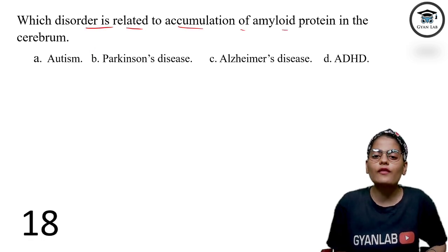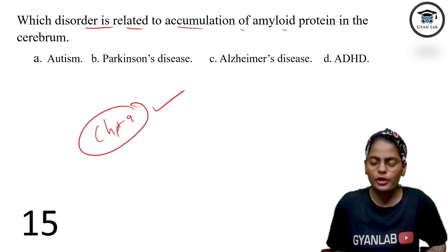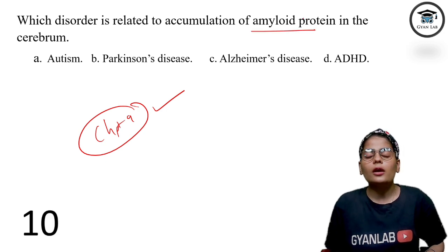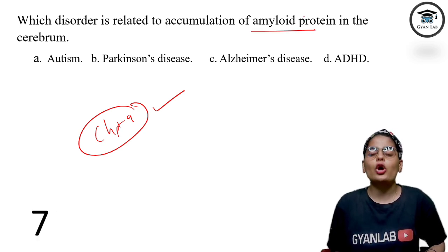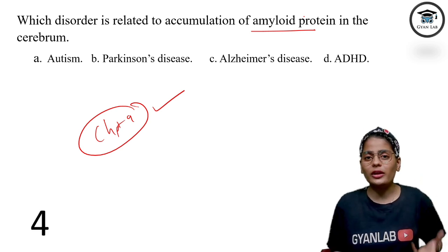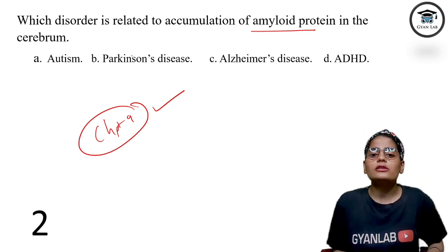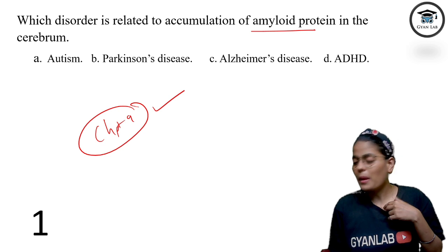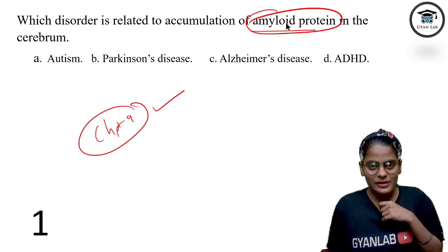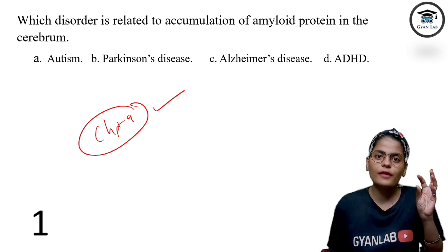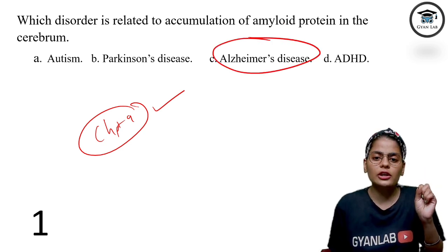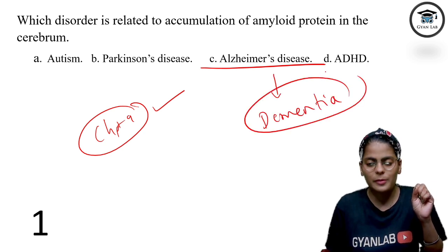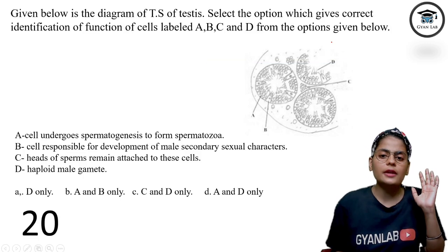Next question: which disorder is related to the accumulation of amyloid protein? This is from Chapter 9, Control and Coordination. We have studied amyloid protein — when there are many amyloid proteins, the memory center of the brain will shrink, and this leads to Alzheimer's disease. If Alzheimer's disease is not treated, it can cause permanent dementia. Dementia means permanent memory loss.